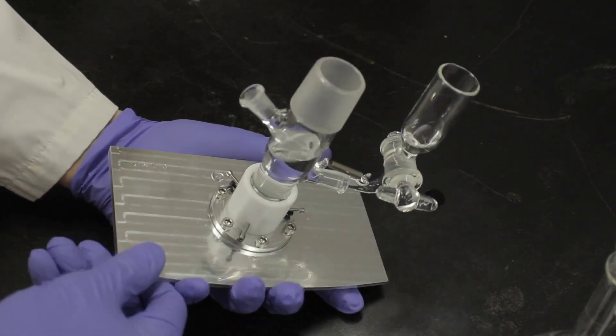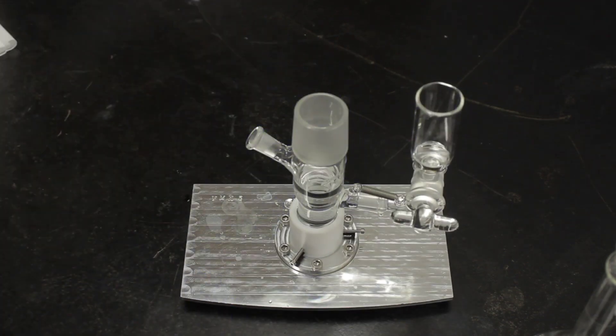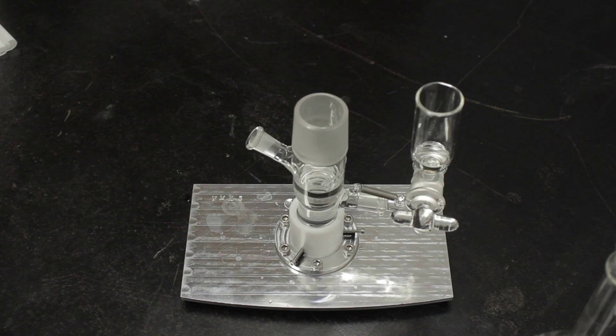Note that the stopcock is kept closed at all times when using the J1 cell. The wetted ground glass surfaces of the stopcock provide a conduction path while mitigating chloride ingress into the main cell body.